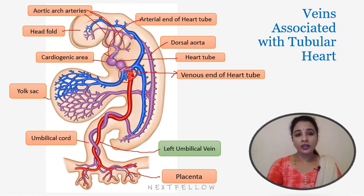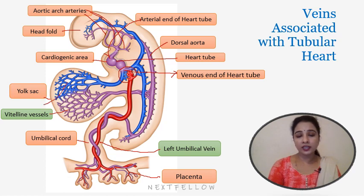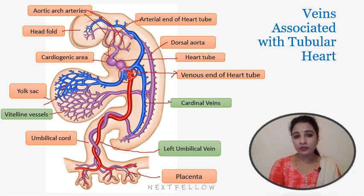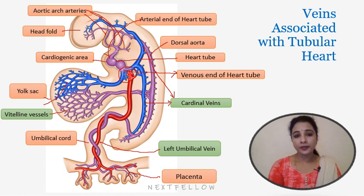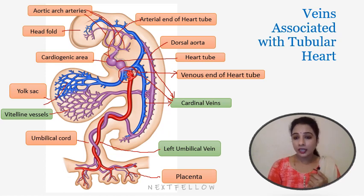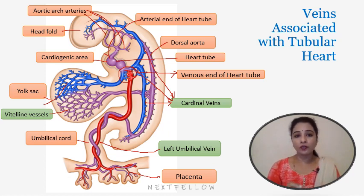This is the yolk sac, supplied by vitelline vessels — vitelline arteries and vitelline veins draining the yolk sac. The cardinal veins, along with the dorsal aorta, drain the body wall and have several segmental veins arising along them. The upper one is the anterior cardinal vein, the caudal one is the posterior cardinal vein, and we can see the common cardinal vein as well. The venous system develops from three sets of veins: vitelline veins, umbilical veins, and cardinal veins, which all drain into the sinus venosus of the heart.